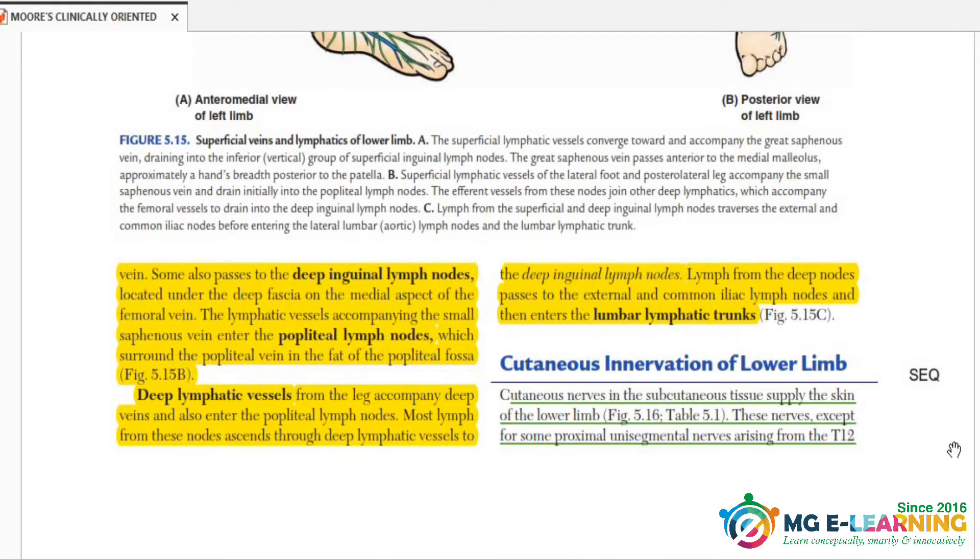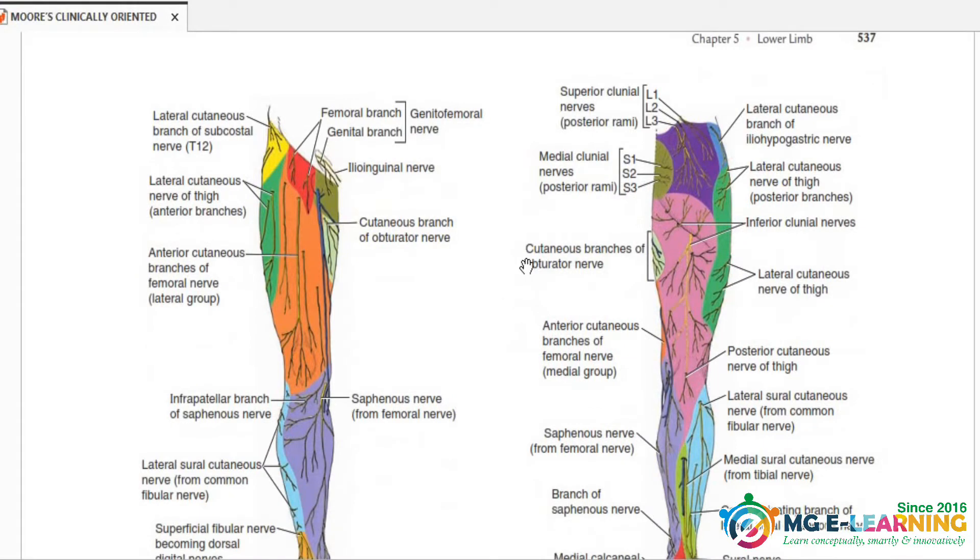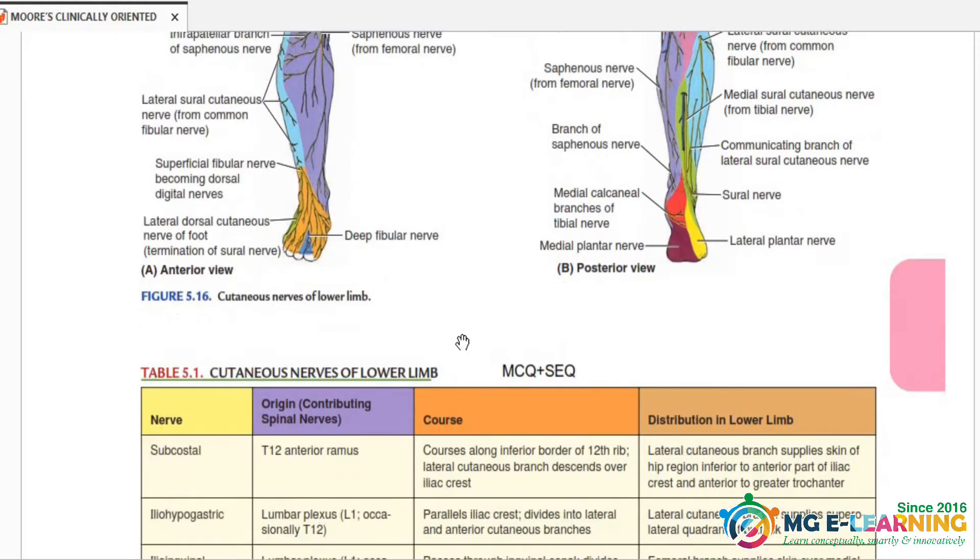Cutaneous innervation of lower limb is important for SQ point of view. You have to know all the nerves that supply the lower limb. This diagram is important to see all the nerves and their respective area of distribution.